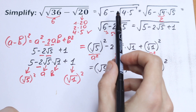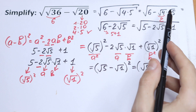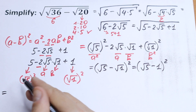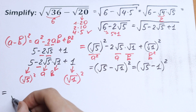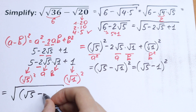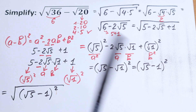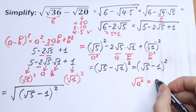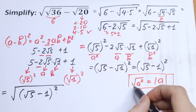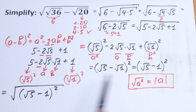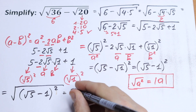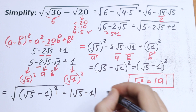But this expression is still under our outer square root sign, so we need to write the final answer. We will have the square root of (√5 − 1)². The rule we need is: square root of a², which equals the absolute value of a. This is exactly our case — we have a square and a square root sign, so we can write this as the absolute value of (√5 − 1).